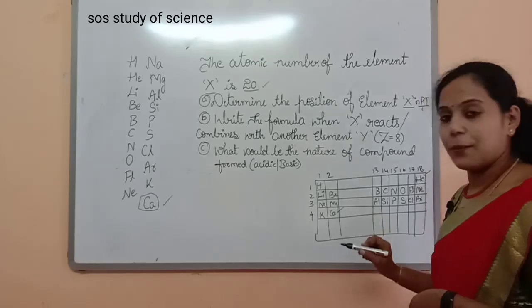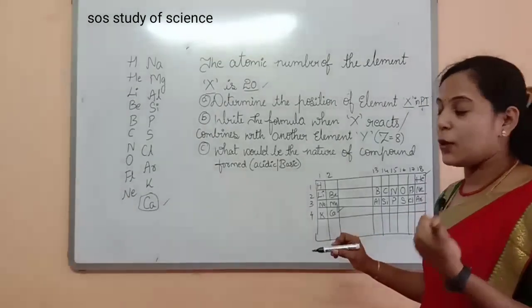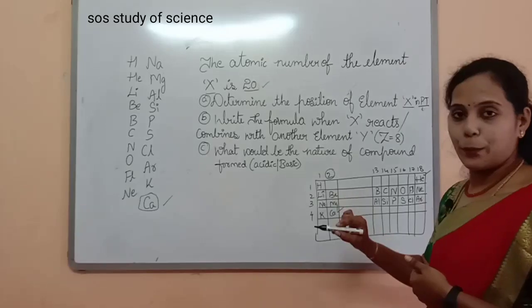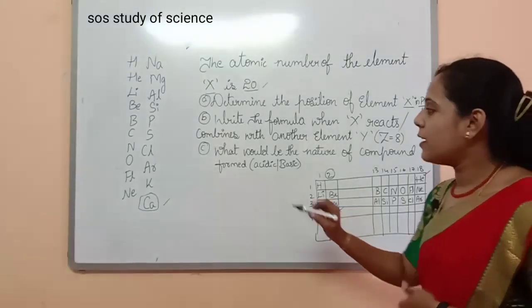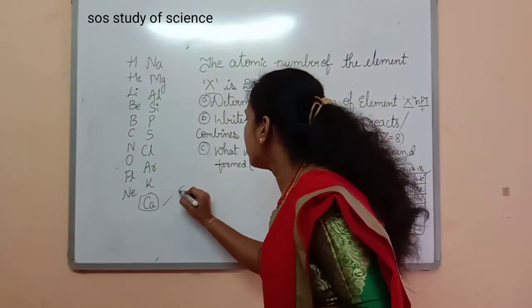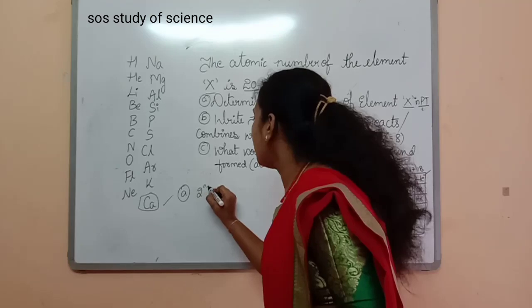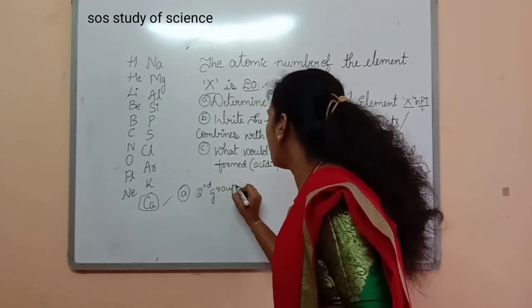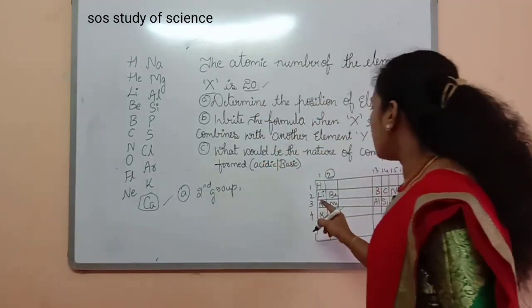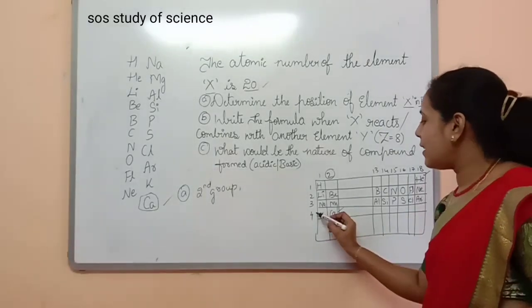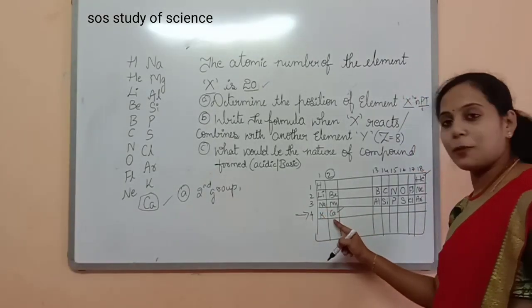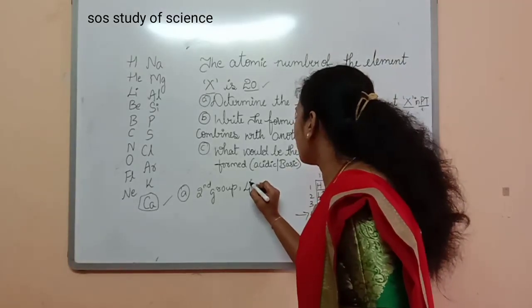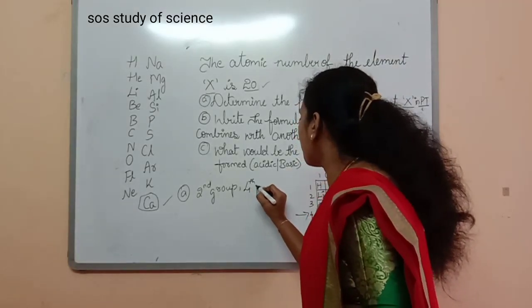Element X is calcium. So for the position of element X: it is in the 2nd group and the 4th period.